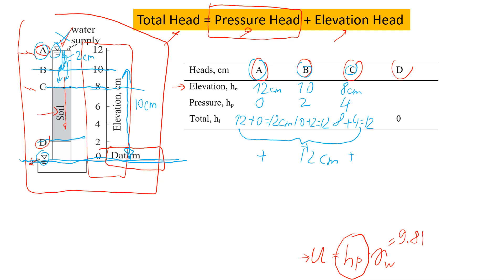Now let's look at point D. Point D is actually below the soil sample — the soil is somehow fixed and hanging in the tube. We know there is going to be water flow, and now we'll estimate the heads at point D. I've already given a clue that the total head at D is going to be zero — I'll explain why shortly. Let's start with the elevation head: it's simply the distance from point D to the datum, which is two centimeters.